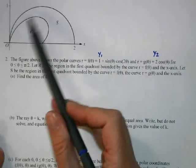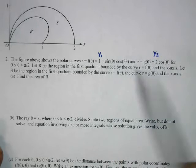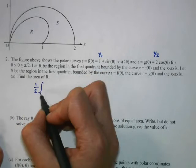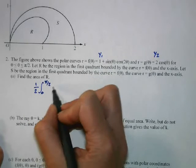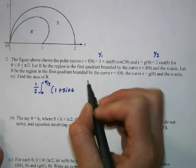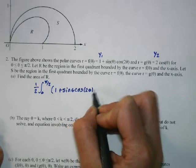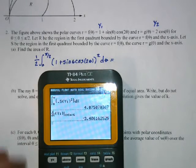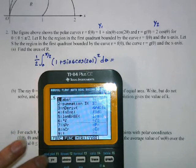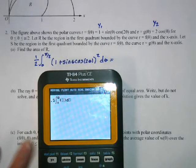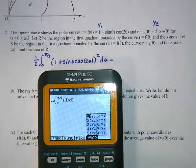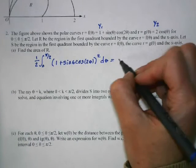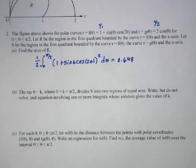The first question says find the area of R, which is the region bounded by f. The area formula is 1/2 times the integral from 0 to pi over 2 of (1 plus sine theta cosine 2 theta) squared d-theta. We let the calculator do the work: 0.5 times the integral from 0 to pi over 2 of y1 squared dx. That gives us 0.648 — always use 3 decimal places.